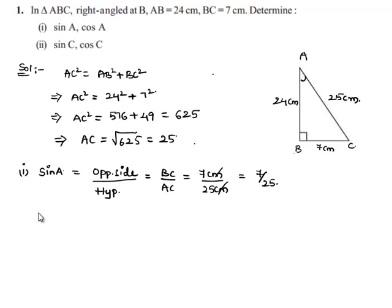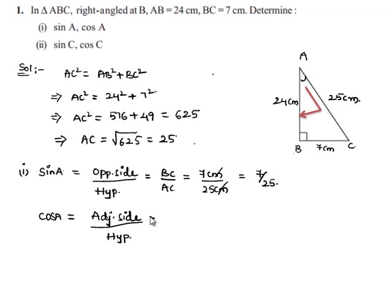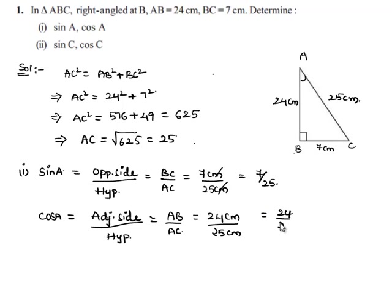We are also asked to find cos A. We know that cos of an angle is equal to adjacent side by hypotenuse. Here, the adjacent side for angle A is AB and the hypotenuse is AC. So cos A = AB/AC = 24/25.